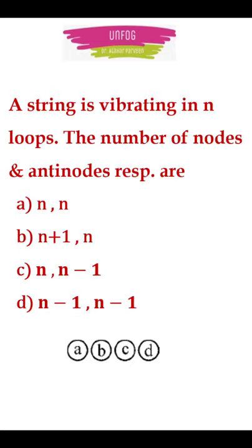So, if you have a question like this where number of nodes and antinodes are asked for a string vibrating in n loops, then option b, that is n plus 1 nodes and n antinodes, is the right option.